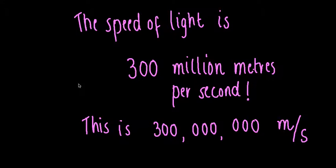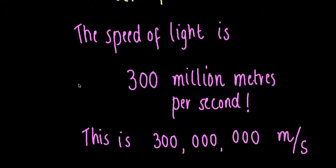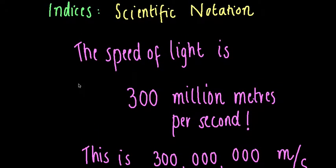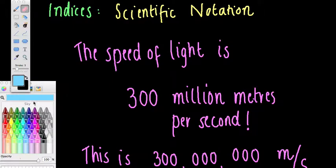Scientists would use these numbers a lot, such as this one here, the speed of light, which is 300 million metres per second. So you can imagine if you were doing lots of calculations, you wouldn't want to have to keep writing that number, 300 million, every time you did a calculation. So there is a way that we'll use indices, scientific notation, to shorten it, to make it easier.